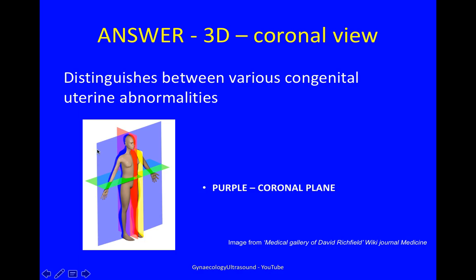In this image here, this purple plane is the coronal plane. It separates the body into an anterior and a posterior half.